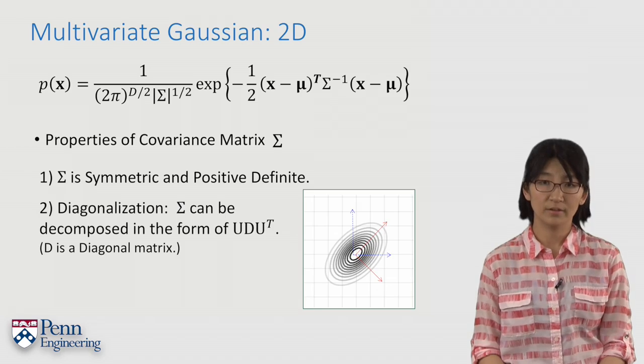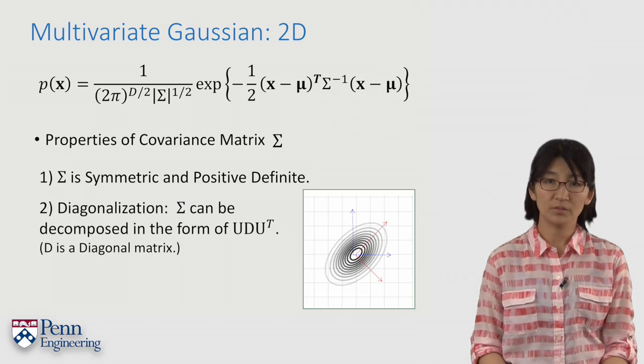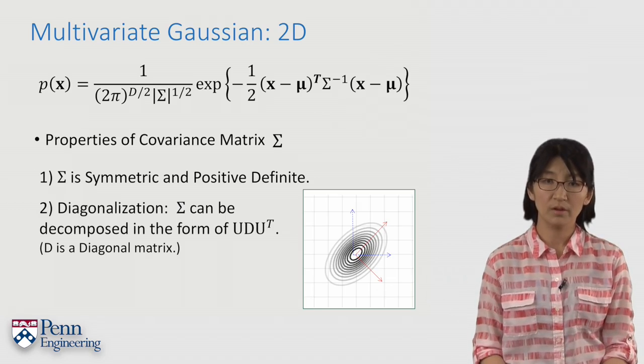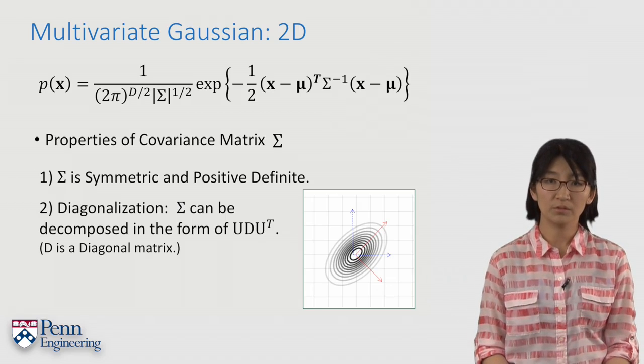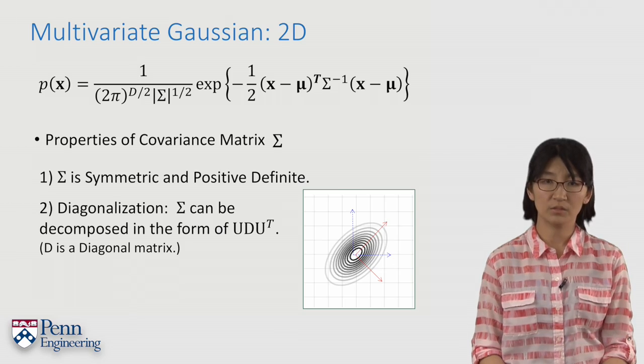Second, even when the covariance matrix has nonzero correlation terms, we can always find the coordinate transformation which makes the shape appear symmetric.